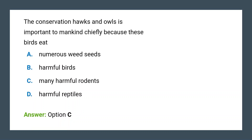Next question: Why is the conservation of hawks and owls important to mankind? Hawks and owls are important to humans because they eat many harmful rodents, so they are helpful for human beings. The correct answer is option C.